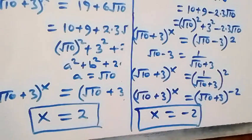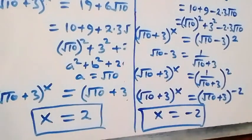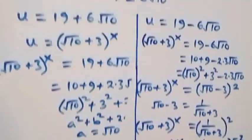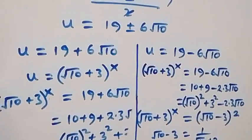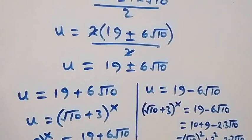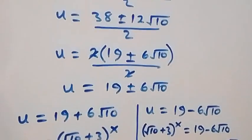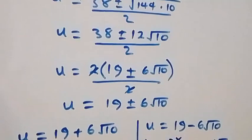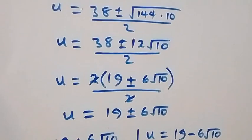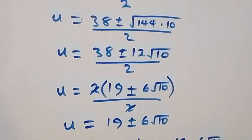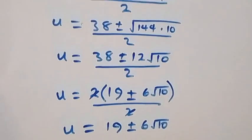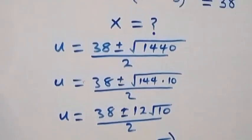Since the bases are equal, we equate the exponents to get x equals -2. Therefore, the solutions are x equals 2 or x equals -2. Thank you for watching — don't forget to subscribe for more exciting videos, turn on the notification bell, share, and leave a comment. See you next class!